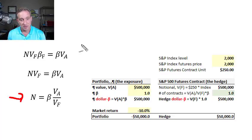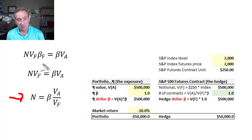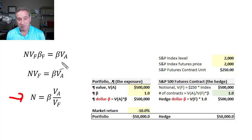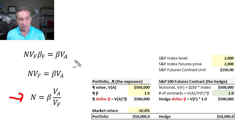Looking at this formula, if we back it out and start at the first step, what we have on the right is the dollar beta of the underlying portfolio — the portfolio we call the underlying exposure. Dollar beta is simply the beta of the portfolio multiplied by the value of the portfolio.